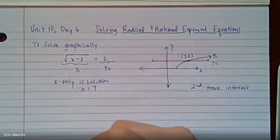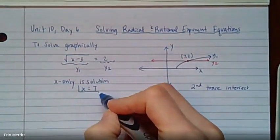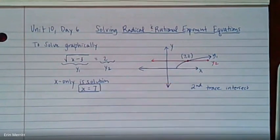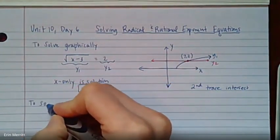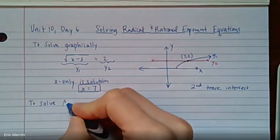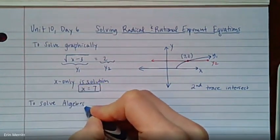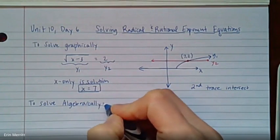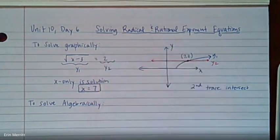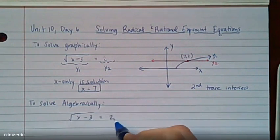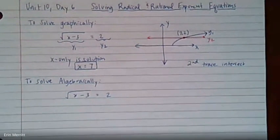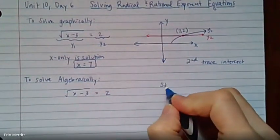But this is one of those cases where we brought the y in. The y was not part of the original, so just the x would be solution. So x equals 7 would be the solution to this particular one. To solve the same question algebraically, which is going to be our focus today.